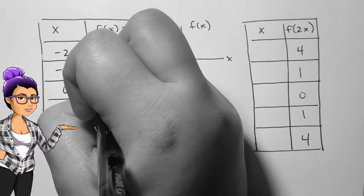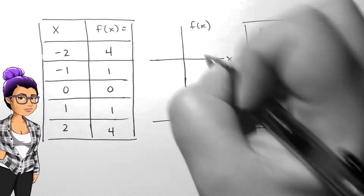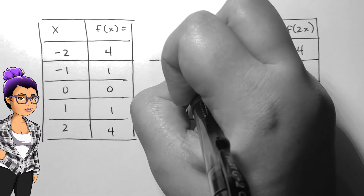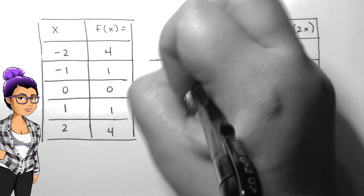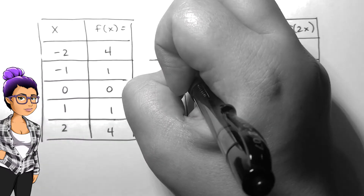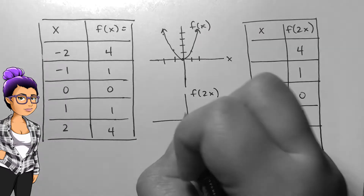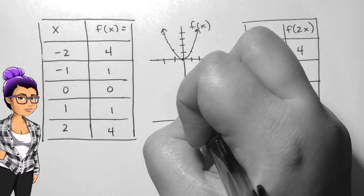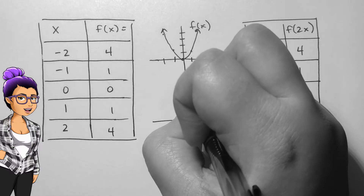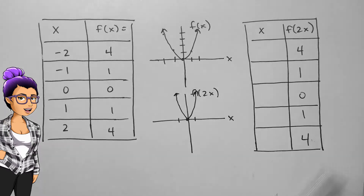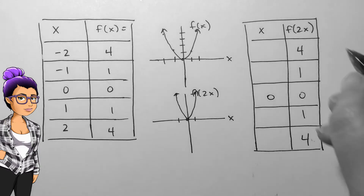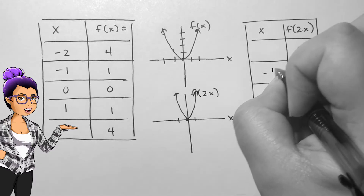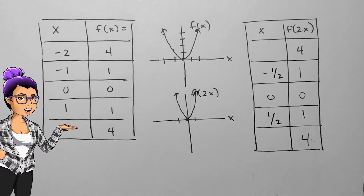Considering the same f of x but now thinking of f of 2x, we will see a horizontal compression by 2. This is not as obvious, so look closely at the table for f of x and the table of f of 2x. This almost looks like a larger vertical stretch. Let's think about where the old outputs are now. 0 still happens at 0. Where is the output equal to 1? It used to be both positive and negative 1, but now it's both positive and negative 1 half. The output used to be 4 at positive and negative 2, but now it's at both positive and negative 1. The outputs for f of 2x are the same as f of x, but they are happening at half the previous input.